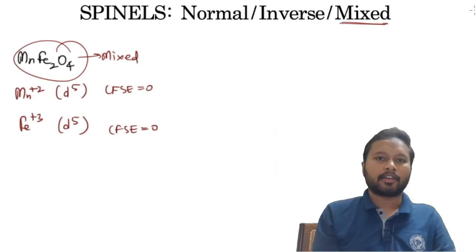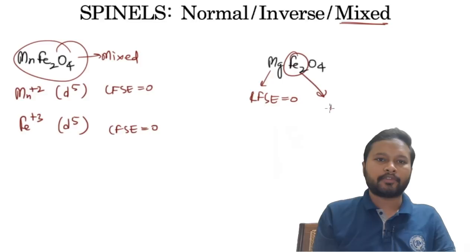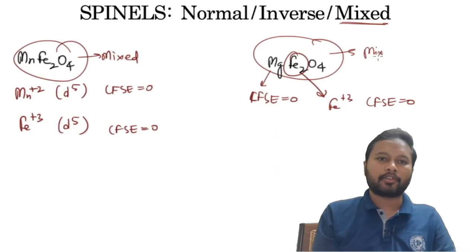Another example of a mixed spinel is MgFe₂O₄. Mg²⁺ is a non-transition metal (CFSE = 0) and Fe³⁺ is d5 (CFSE = 0). Since sizes are also comparable, we again cannot decide, making this another mixed spinel. So there are just three types: normal, inverse, and mixed.